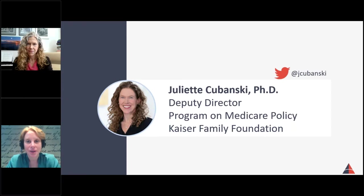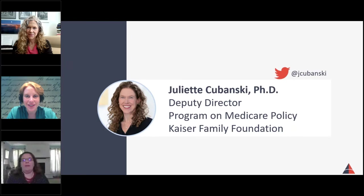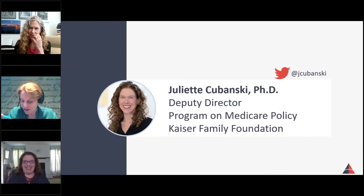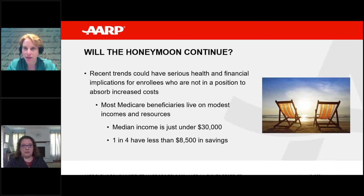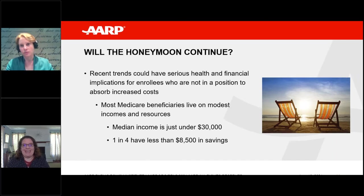Before turning to Dr. Kubanski, I wanted to follow up on that last point. With a median income of $30,000 and one in four having less than $8,500 in savings, you mentioned the LIS or extra help program. Can you share a little more about how somebody qualifies for that, how they know they qualify, and is everybody who should be getting it actually getting it?